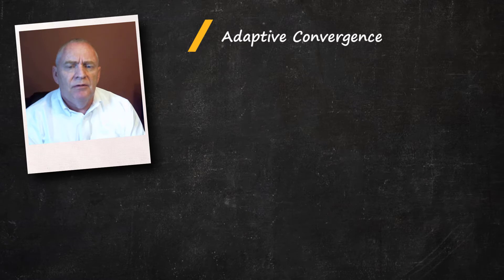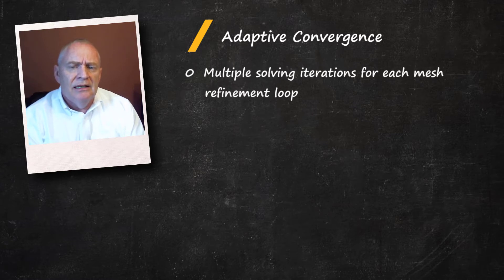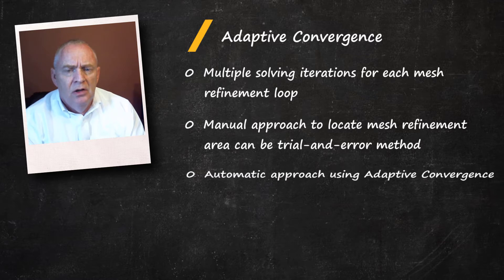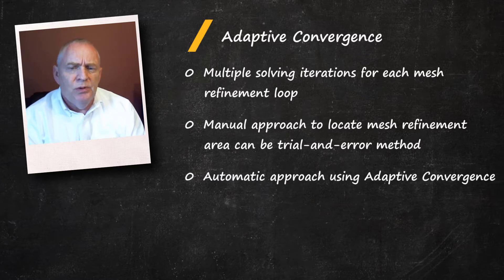Coming back to adaptive convergence, it requires solving the problem multiple times with ever-increasing refinement of the mesh. In the past, engineers would have needed to determine manually where to refine meshes to obtain good numerical accuracy, which can be an error-prone process. With the help of ANSYS, this procedure can now be done automatically for finite element analysis. Now, let's have a look at a simple example using the adaptive convergence tool.